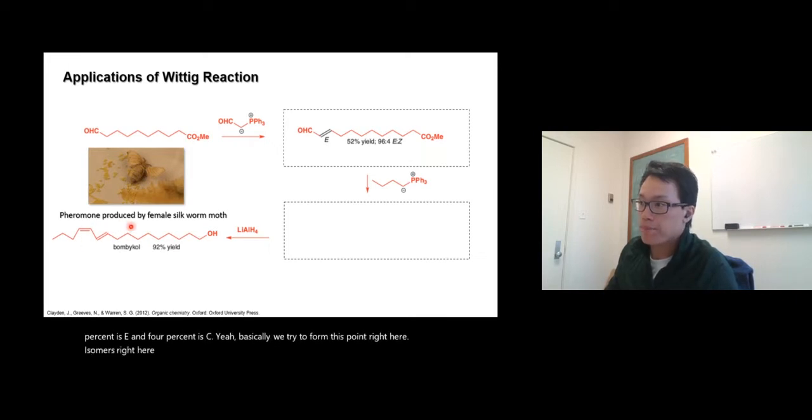Next one, so we are going to form a Z double bond, so we're going to use an unstabilized ylide. That's unstabilized, like no electron withdrawing group on it, and you're gonna get that, this one right there.